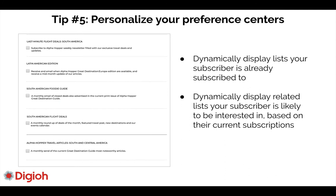Tip number five: personalize your preference centers. You can pull all the data that exists in your email marketing system and only display the lists they're already opted into. You can also dynamically display related lists they might be interested in. So your email preference center becomes not just a place to manage subscriptions, but almost an upsell page — 'Did you know we have these other related newsletters?' It can be a very powerful upsell experience.